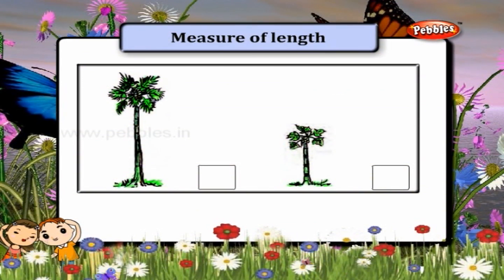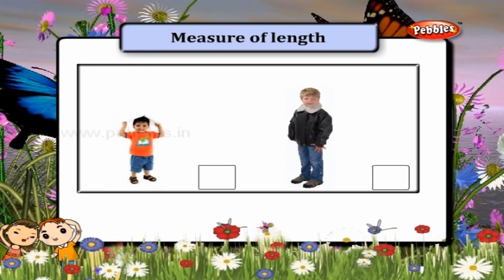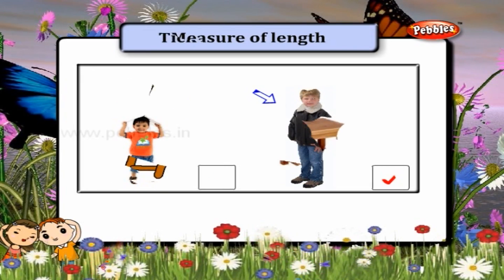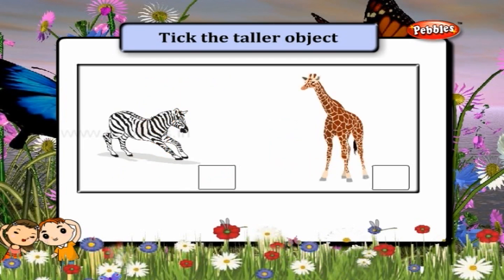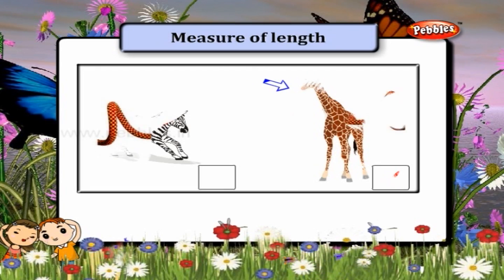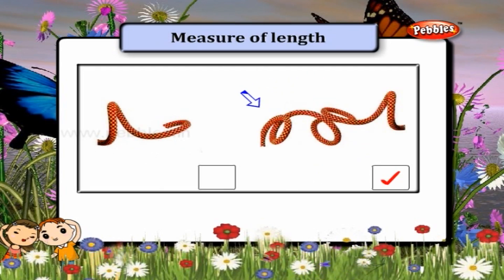Tick the taller object. This tree is taller. This boy is tall. This boy is tall.